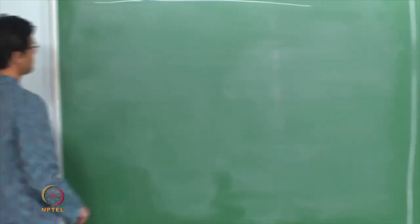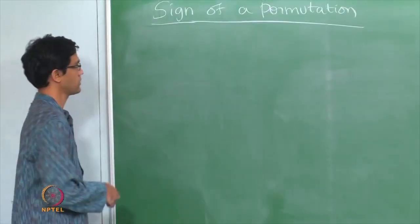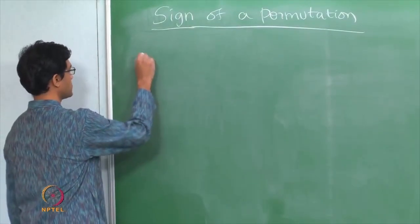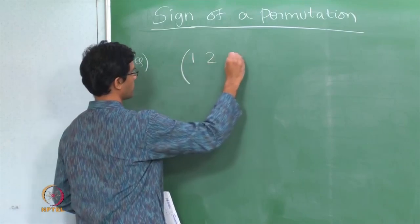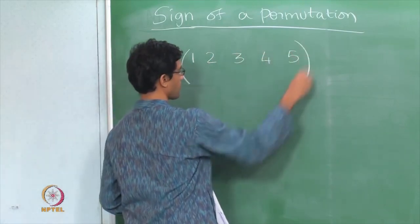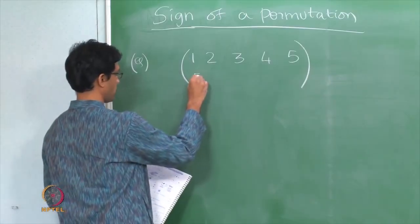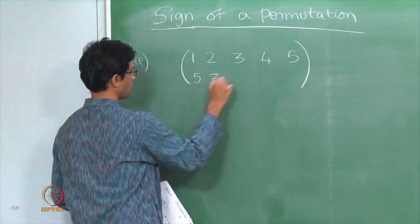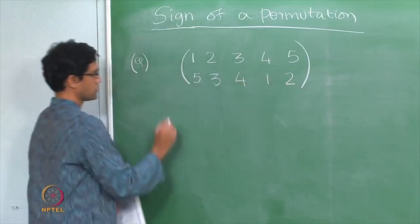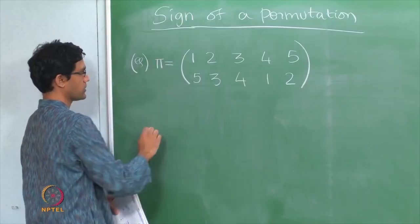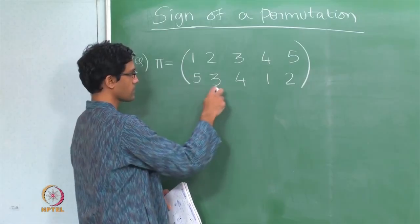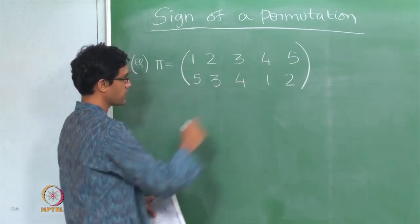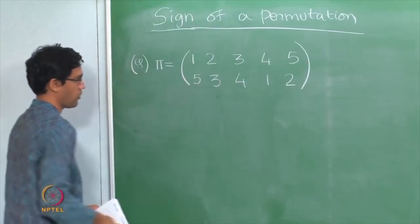Welcome back. Today we discuss the notion of a sign of a permutation, and we will do this by example. Consider the following permutation written in 2-line notation for numbers 1 through 5: the permutation pi is 5, 3, 4, 1, 2. The bottom row is the permutation of numbers 1 through 5.